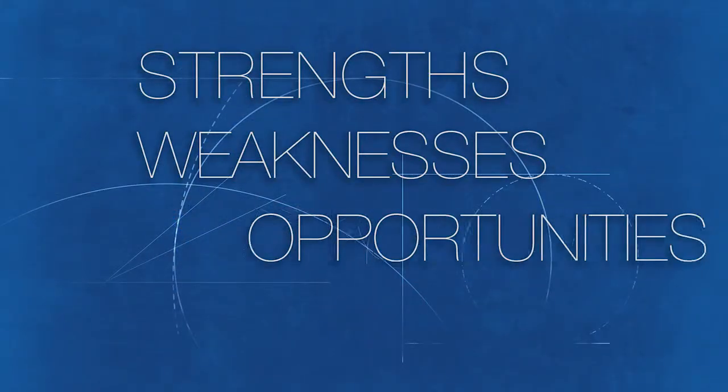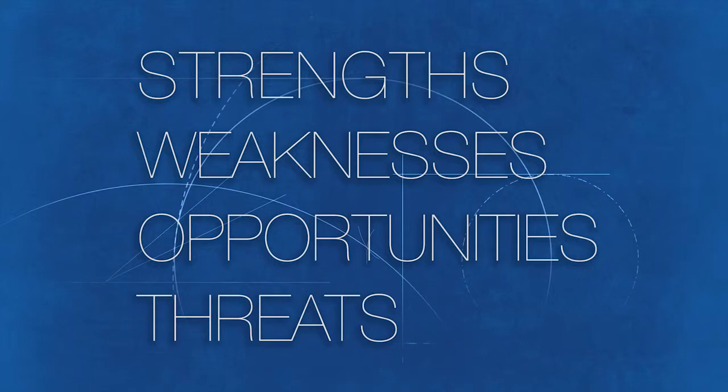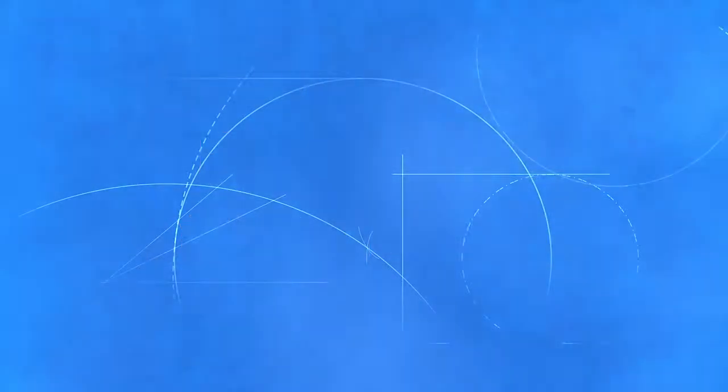That first strategic planning step any organization usually does is what they call a SWOT analysis: strengths, weaknesses, opportunities, and threats. And you look at those four things and say, what are we doing right? What are we struggling with? What are some opportunities we have in the future? So part of the process was to get a lot of input from our constituency.